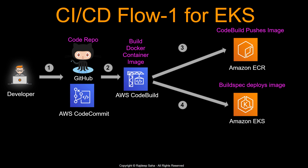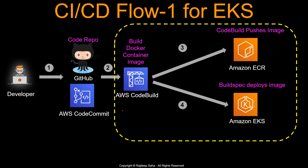In the buildspec file you tell CodeBuild what to do. CodeBuild takes your application code, installs any required dependencies, Dockerizes your code into a container image, and then pushes that container image into the image repository — in this case Amazon ECR. The fourth step deploys the image into Amazon EKS.